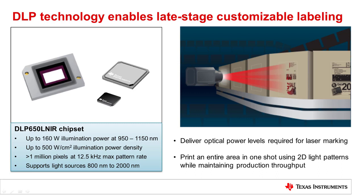Its digital controller, the DLP-C410, enables high-speed pattern rates up to 12.5 kHz, switching more than 1 million pixels to create dynamic, detailed grayscale images while maintaining production throughput.